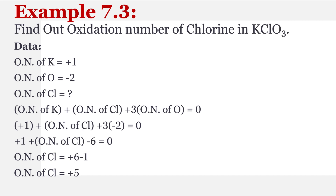Now example 7.3: find out the oxidation number of chlorine in potassium chlorate KClO3. Is mein chlorine ka oxidation number find out karna hai. Potassium kyunke group one mein shamil hai, is wajah se uska oxidation number hai plus one. Oxygen ka apko pehle hi malum hai. Data: oxidation number of potassium is plus one, oxidation number of oxygen is minus two, and oxidation number of chlorine we have to find out. Formula ki form mein: oxidation number of potassium plus oxidation number of chlorine plus three multiplied by oxidation number of oxygen equal to zero.